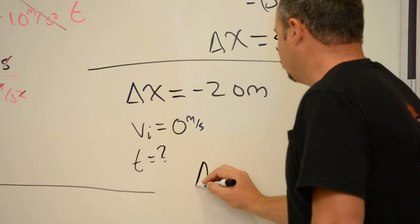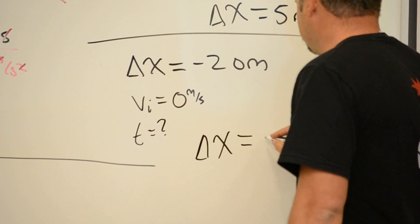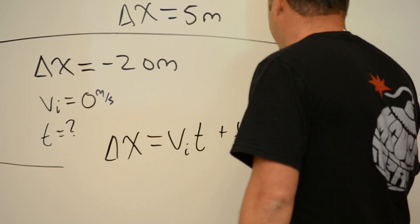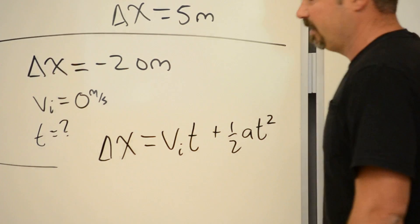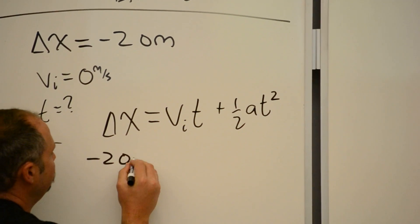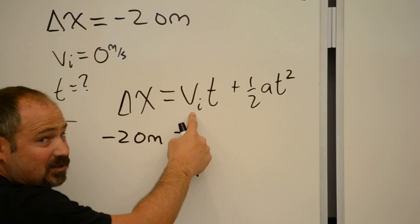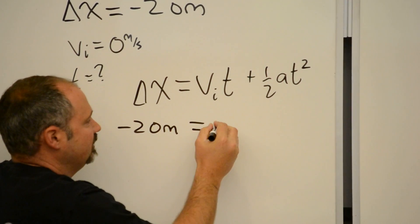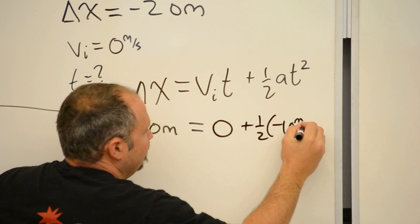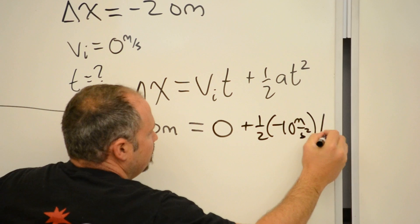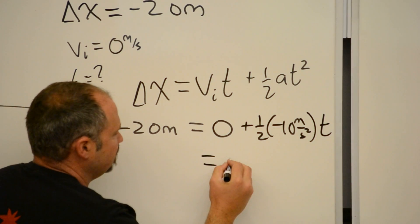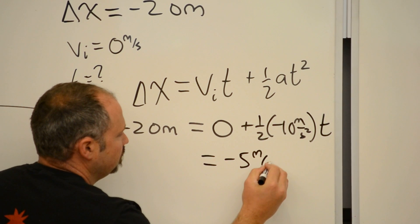Well, we can use this equation: displacement equals initial velocity times time plus 1 half at squared. And now we can just plug in the values. I know that this is negative 20 meters. I know the initial velocity is zero. Zero times anything is zero. And then finally, plus 1 half minus 10 meters per second squared times the time. And this simplifies to minus 5 meters per second squared times time.